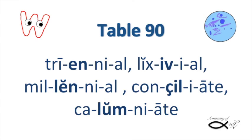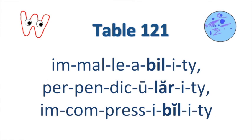Now we're getting to see the true power of Webster with these words. The last few tables were 7th and 8th grade level words. This is 9th grade level, and I've had plenty of young elementary students be able to sound these out easily once they've over-learned the syllables. You teach the syllables so well that they can spell and sound out any of them. Then they learn the schwa accent pattern and can approach these words with ease: triennial, lixivial, millennial, conciliate, columniate. And here, some 12th grade level words. Again, I've had many young elementary students capable of sounding them out after working through Webster: immalleability, perpendicularity, incompressibility — even a few kindergartners.